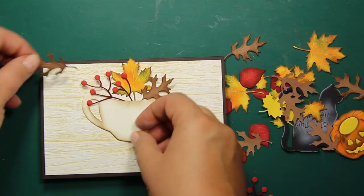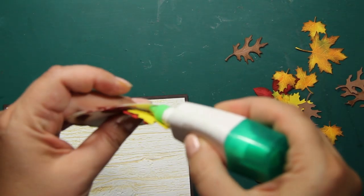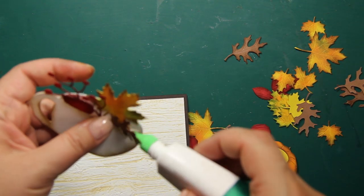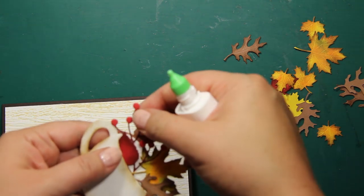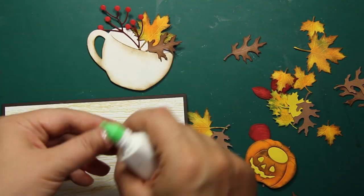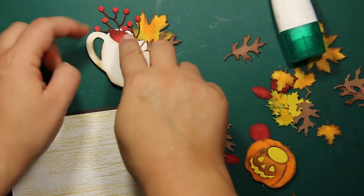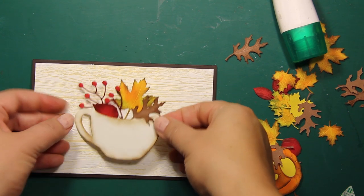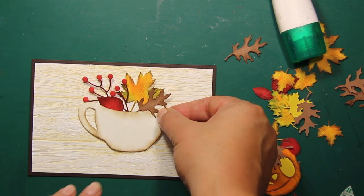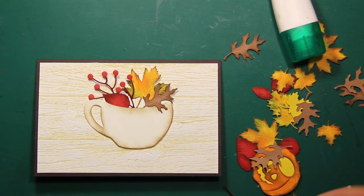It already has that slit created by the die, and all I have to do is take some leaves and berries and play around with them to create my little bouquet. Once I'm happy with their placement, I'm just using a tiny dot of liquid adhesive to attach each element in its place. Then I'm going to attach the entire cup with the leaves onto the card with foam tape. By the way, this cup can be used to hold a gift card, and that is exactly why it's called a gift card cup.